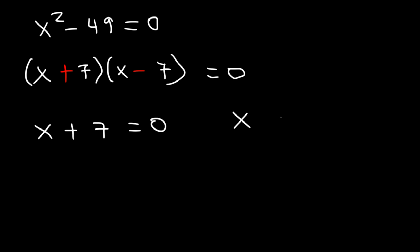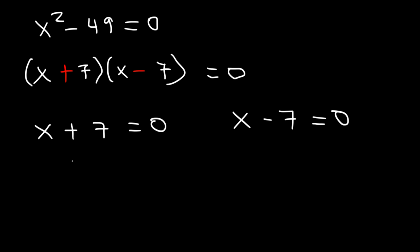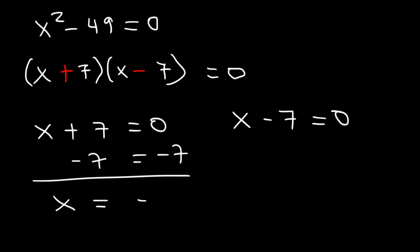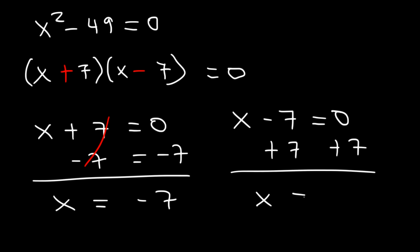So we have x plus 7 is equal to 0, and x minus 7 is equal to 0. The reason why we can do that is because if one of these terms is equal to 0, then everything is 0 — 0 times anything is 0. So x is equal to negative 7. And in the other equation, if we add 7 to both sides, we can see that x is equal to positive 7.